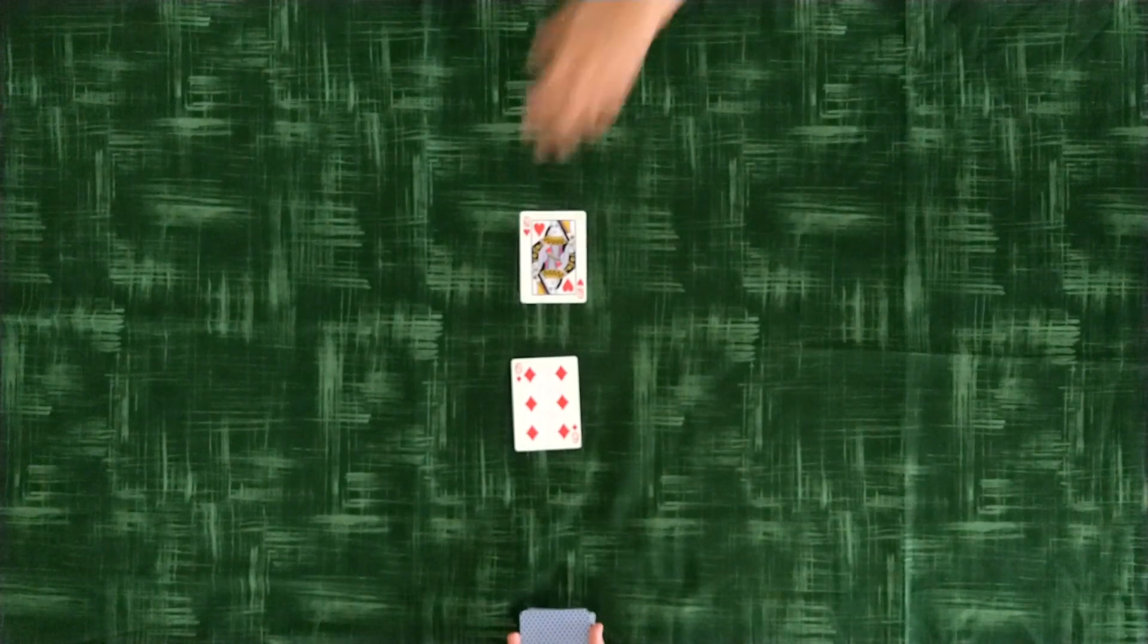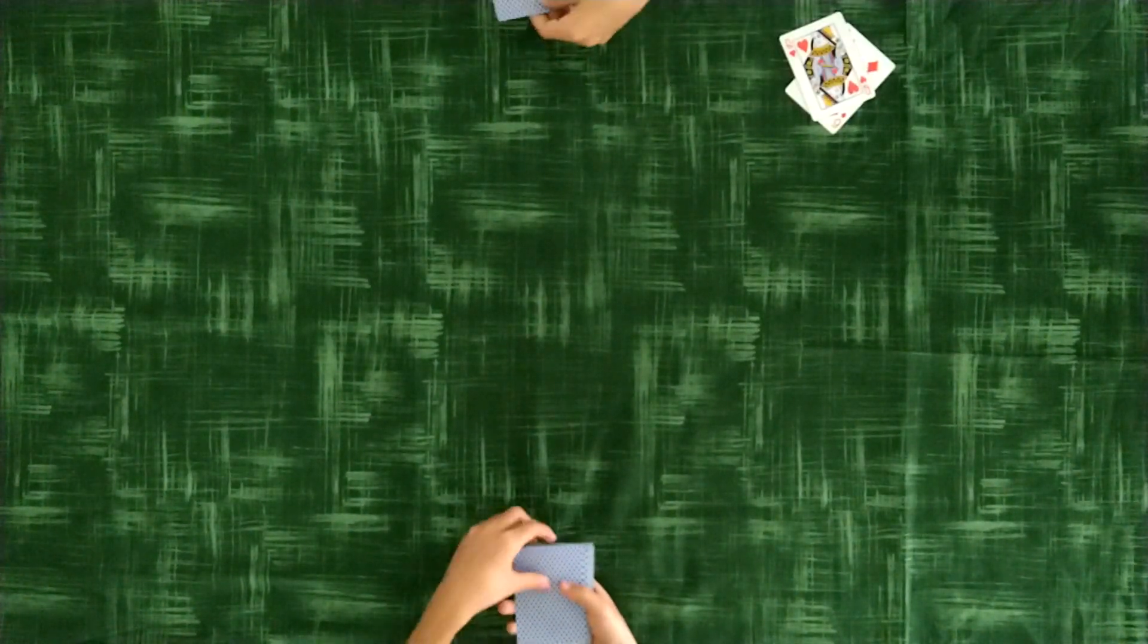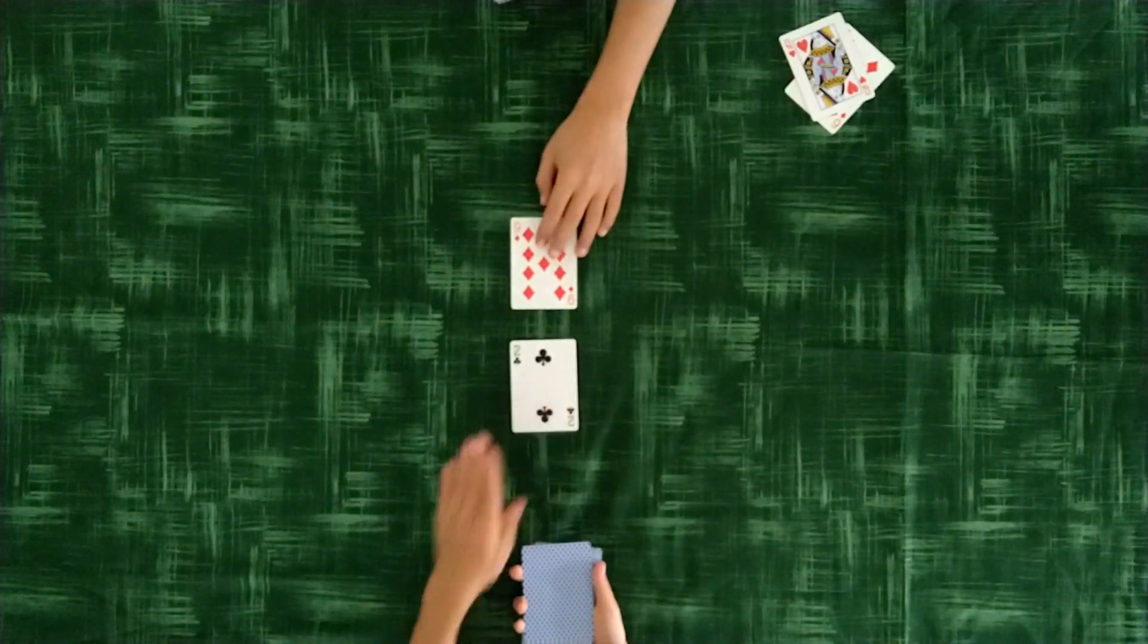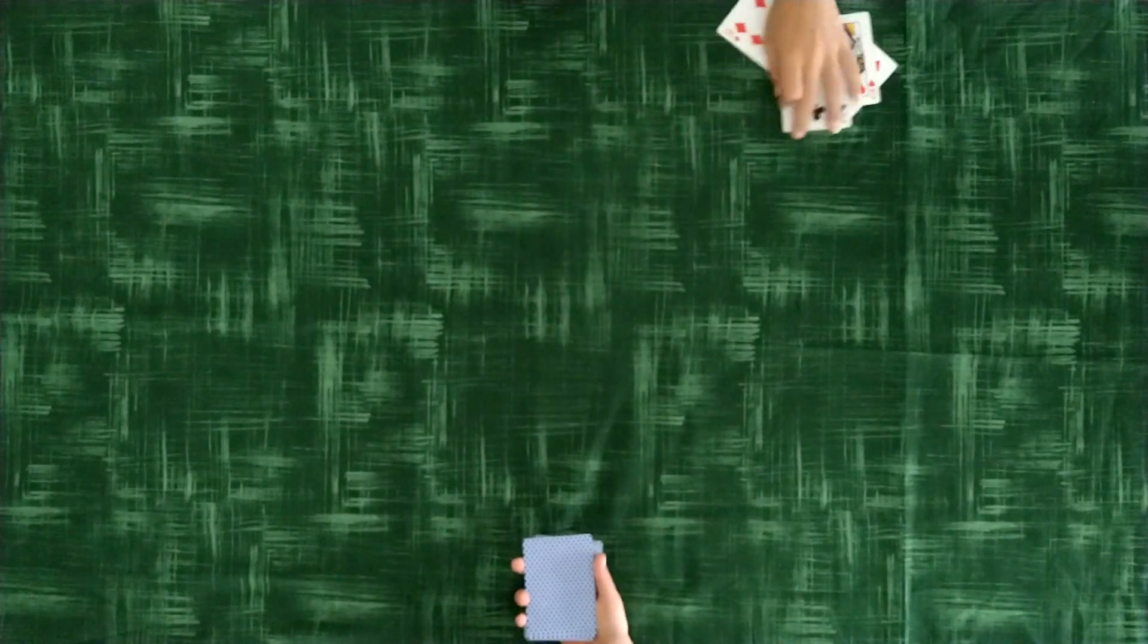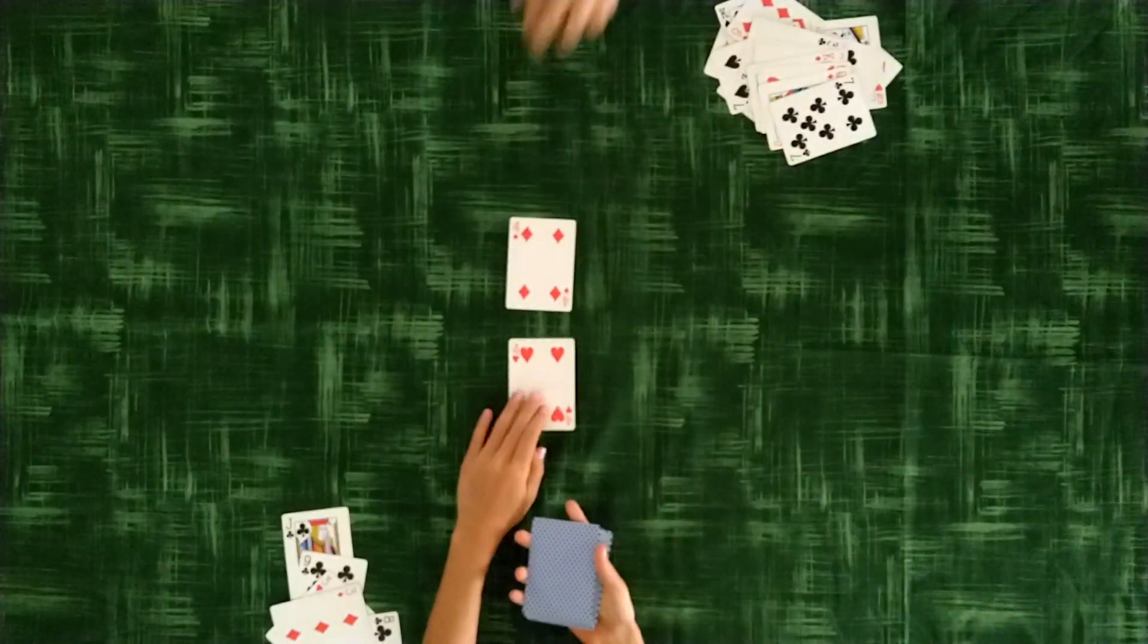Each of you places the first card in your deck and puts it face up on the table. Compare those two cards and whoever placed the highest card collects them and puts them in a pile next to them. Keep repeating this process.